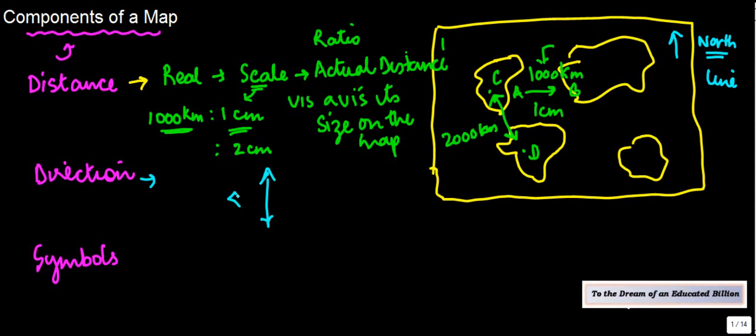Once you know the north direction, whichever way it's being pointed out, then you can easily find out the other directions. How? We know north is here, south is here, east is here, west is here. So once you know which direction is north, you can adjust the remaining accordingly, isn't it?